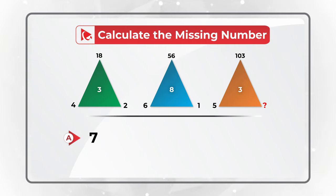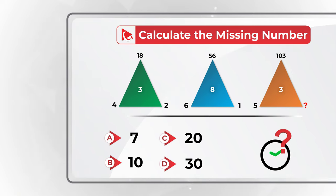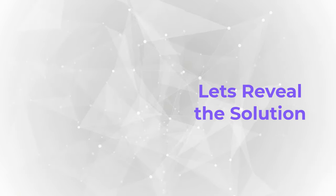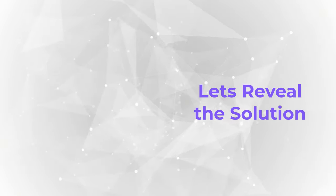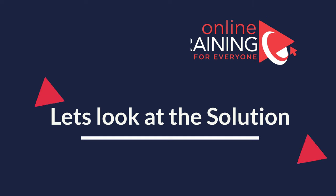Choice A: 7. Choice B: 10. Choice C: 20. And Choice D: 30. Do you see the answer? The solution is very obvious, but I would like you to try to get to it on your own. Ready or not, I am moving forward to reveal the solution. If you have any suggestions on how to solve these types of challenges faster, please share in comments.